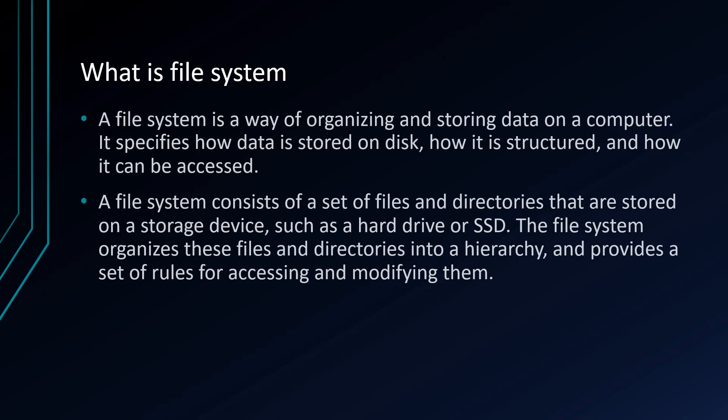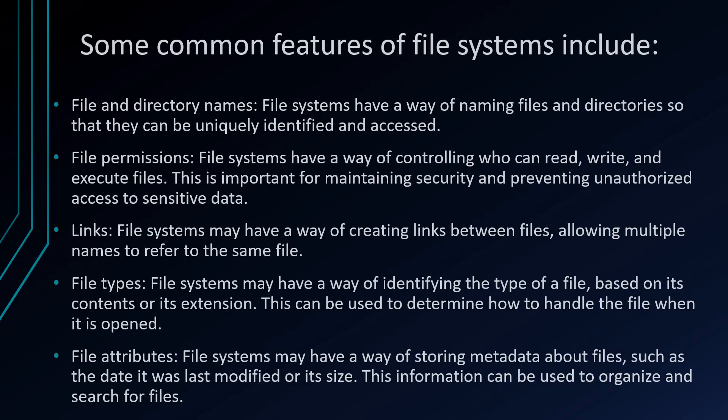That organized structure of a closet is similar to how data is also organized. Which type of data should be on which drive and which directory — that is part of the file system. A file system consists of a set of files and directories stored on a storage device such as a hard drive or SSD. The file system organizes these files and directories and provides a set of rules for accessing and modifying them.